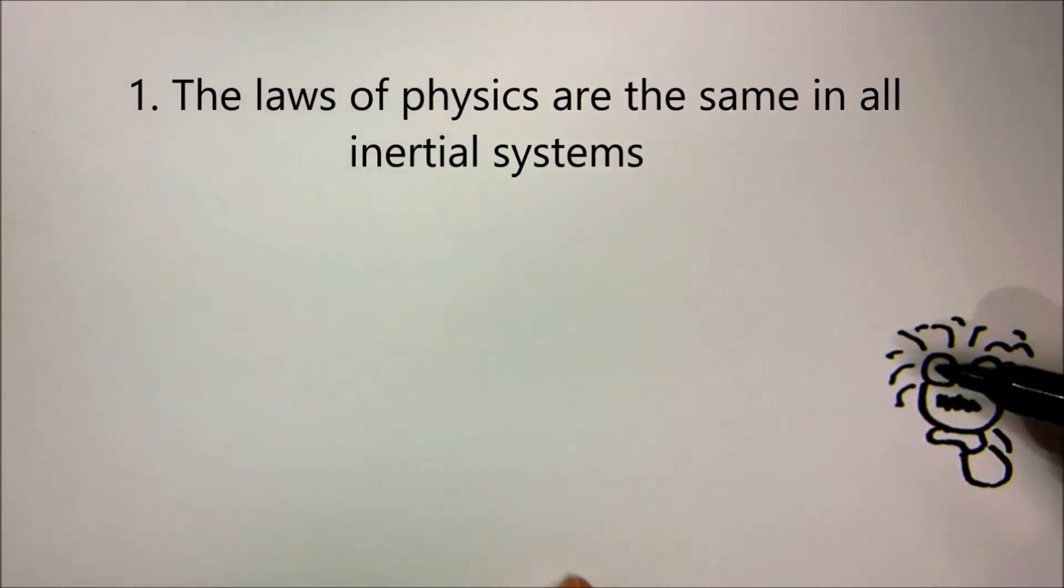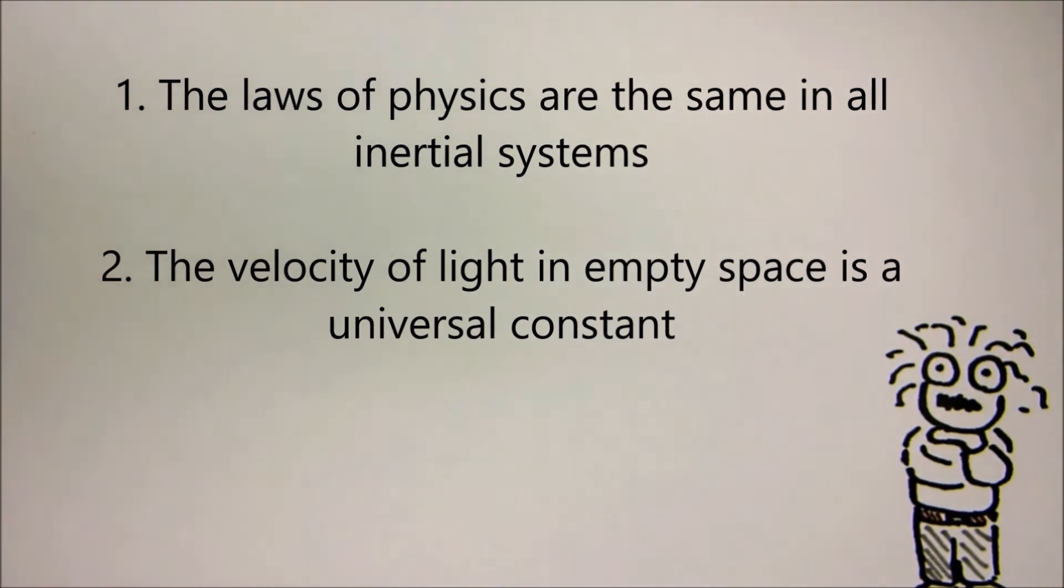This led Einstein to come up with two postulates of special relativity. Number one, the laws of physics are the same in all inertial systems, where an inertial system is one in which isolated bodies don't accelerate. And number two, the velocity of light in empty space is a universal constant.